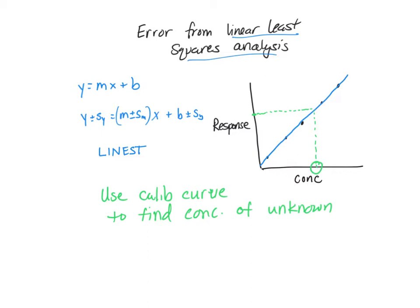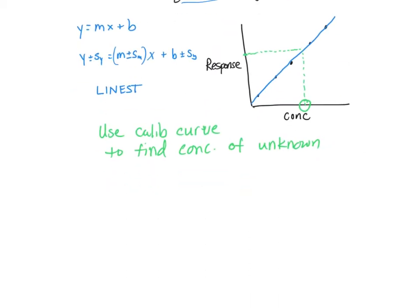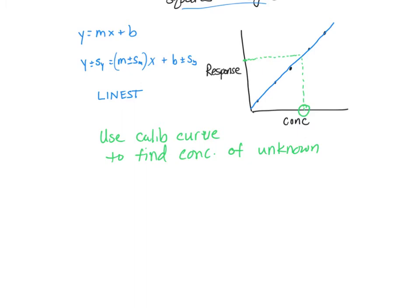But it's important to realize that the concentration that we get from the curve will have an error associated with it. So what we will do is determine the error in that concentration, which we'll call x. I think the latest edition of the book calls this u sub x. Earlier editions referred to this as s sub x, so you may have one of those as well.